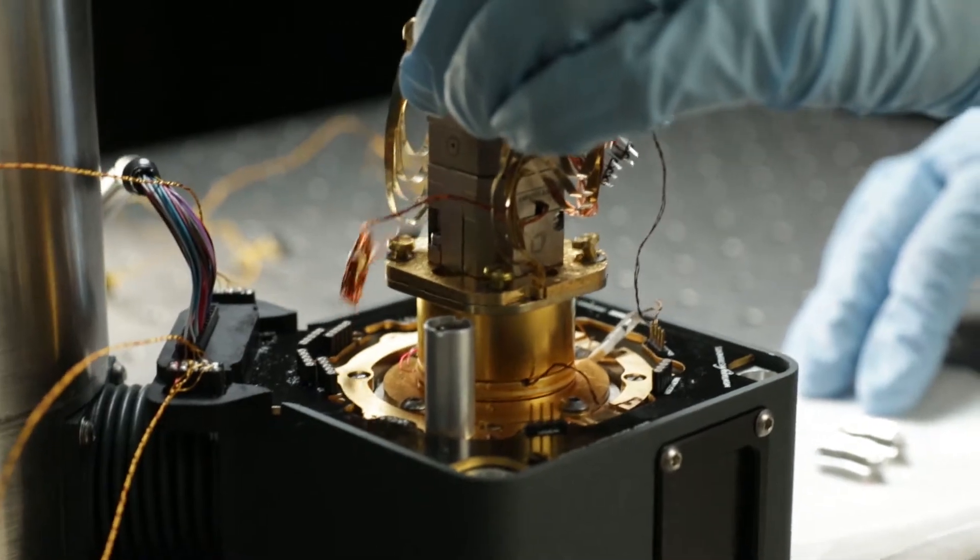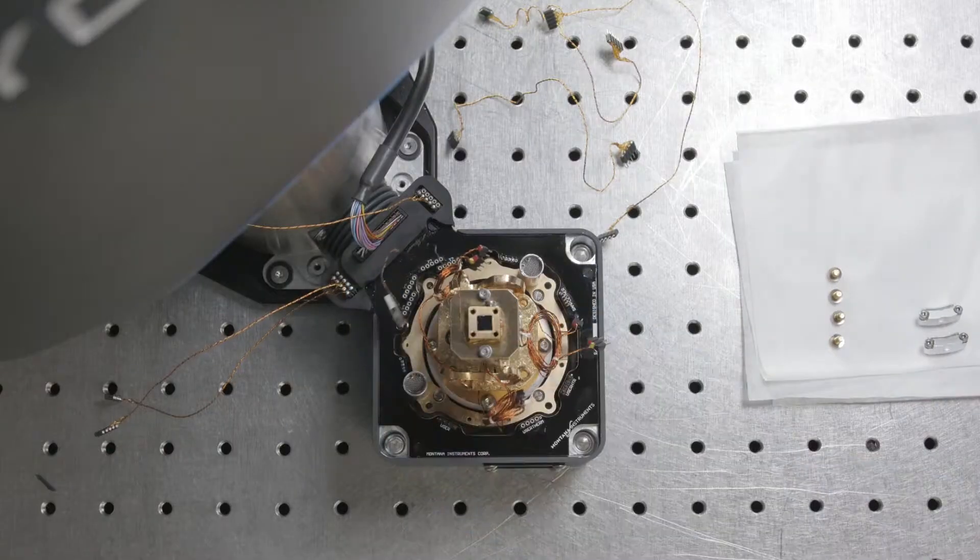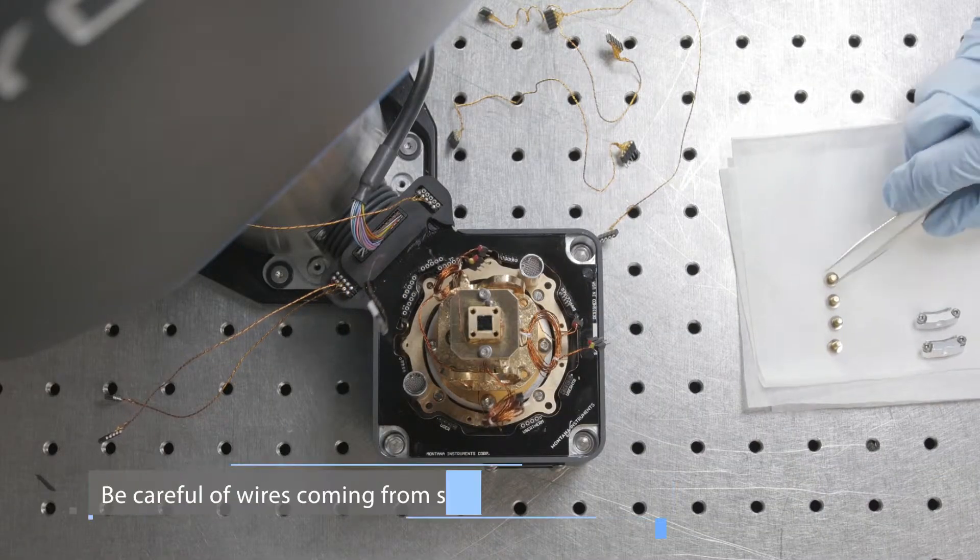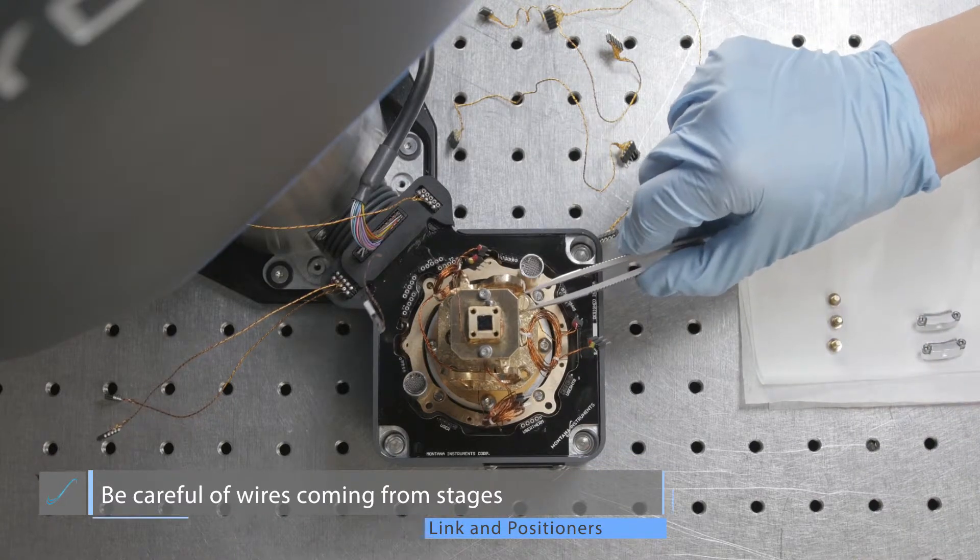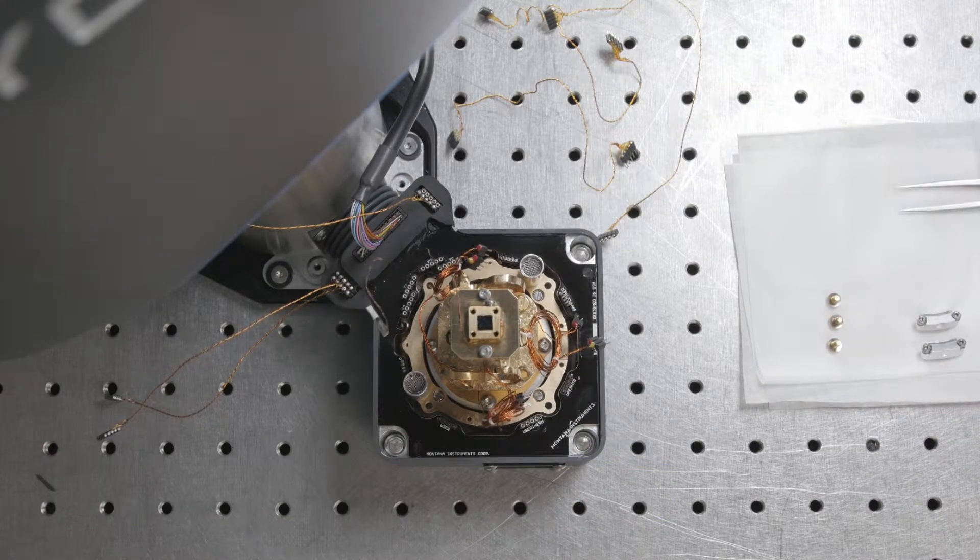We'll add the flex link being careful not to clip the wires. We'll secure the flex link to the adapter plate with four M3x6 brass loaded screws with Belleville washers.